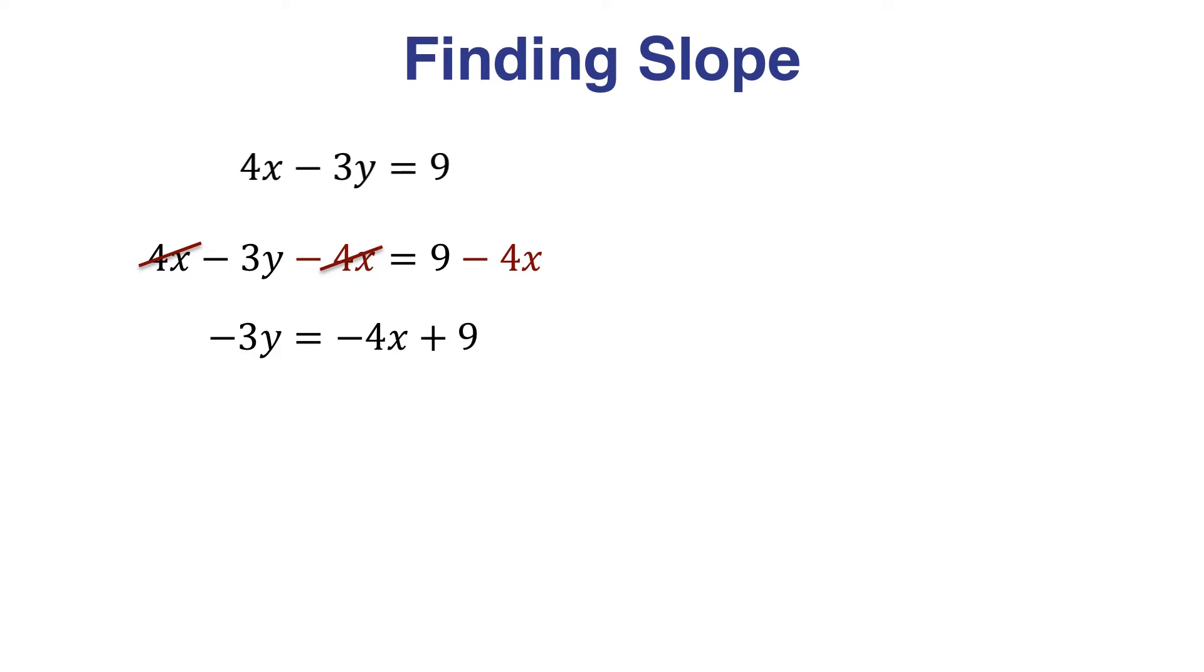That's a great first step. Now let's divide everything by negative 3 to get rid of that negative 3, or we can just multiply both sides by negative 1 third. On the left side, the negative 3's just cancel, so we just end up with y. And on the right side, distributing the negative 1 third through, we should get...